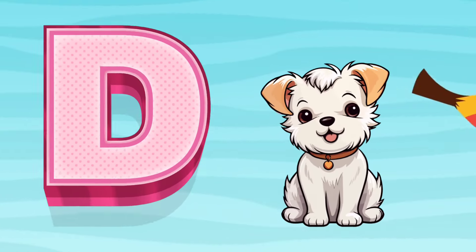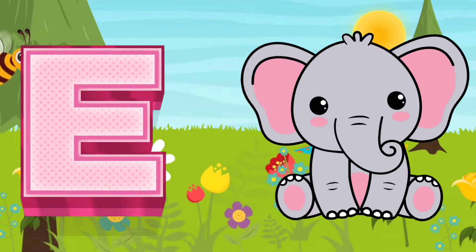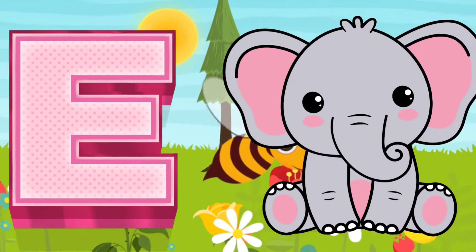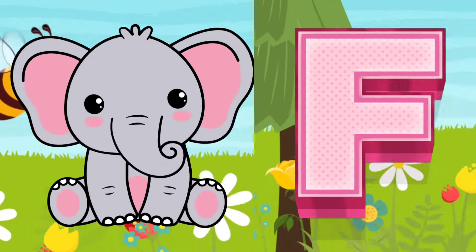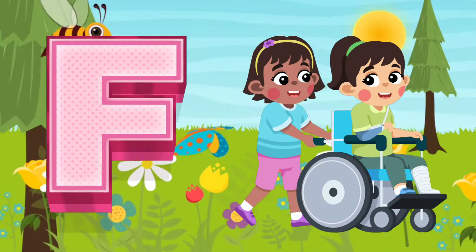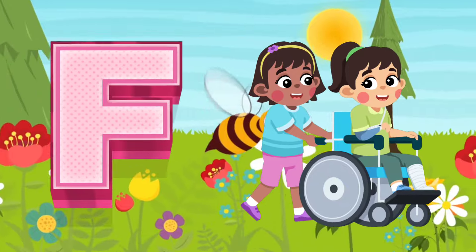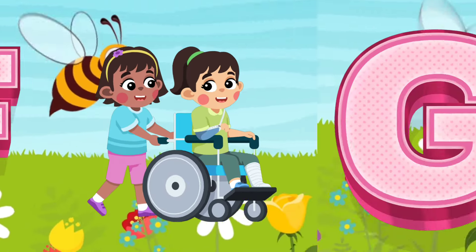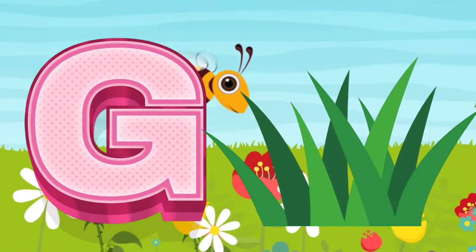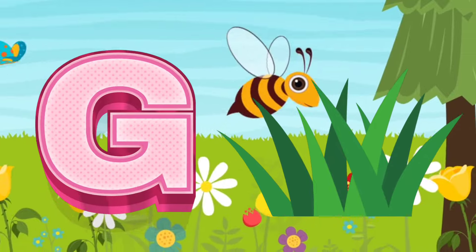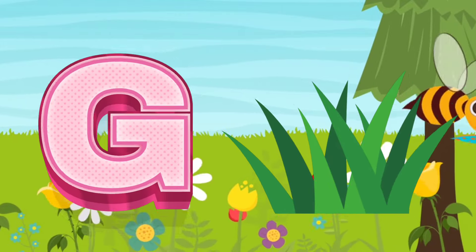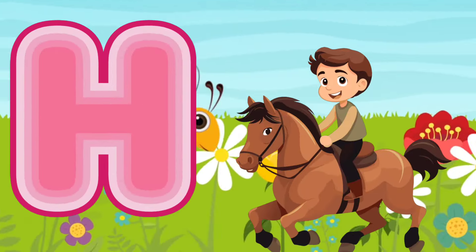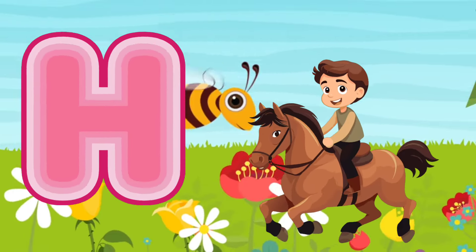E is for Elephant. F is for Friend. G is for Grass. H is for Horse.